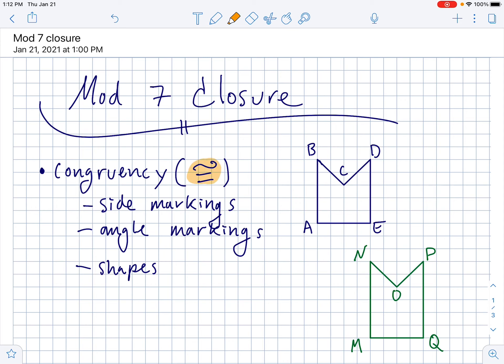So I would know about this congruency symbol. It means that if two shapes are the same, all the sides are the exact same length, and all the interior angles are the exact same measure.